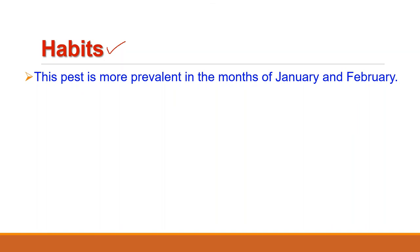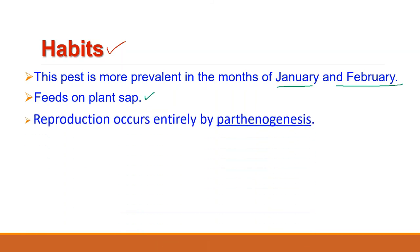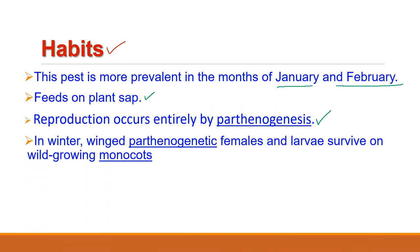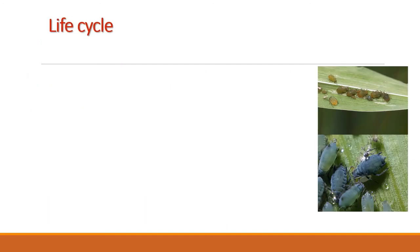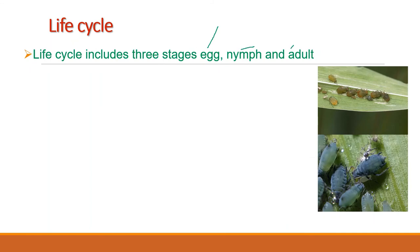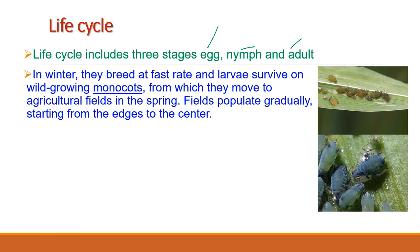This pest is more prevalent in January and February. It feeds on plant sap especially from the ear heads and tender leaves. Reproduction occurs entirely by parthenogenesis. In winter, winged parthenogenetic females and larvae survive on wild-growing monocots. The life cycle includes three stages: eggs, nymph and adult. They breed at a fast rate and larvae survive on wild-growing monocot plants, then move to agricultural fields in spring, populating gradually from the edge to the centre. Wheat aphids reach maximum population in March.